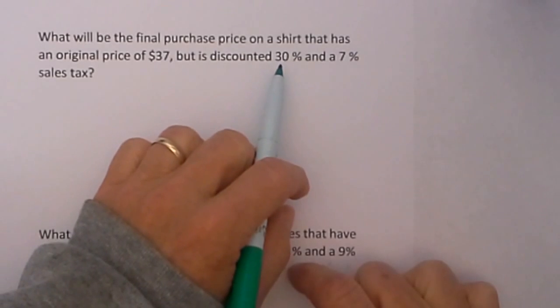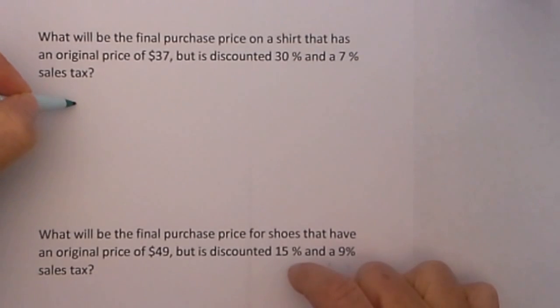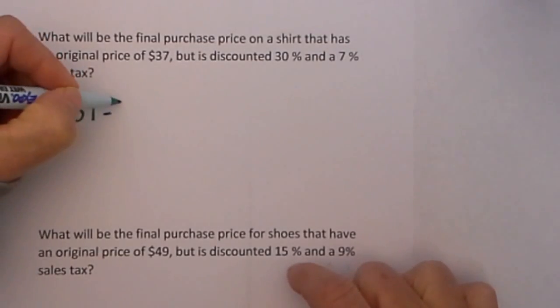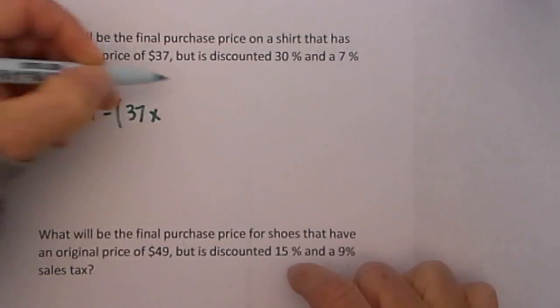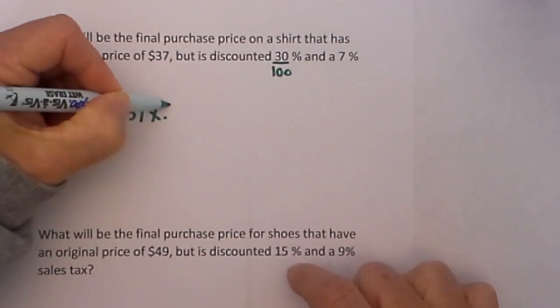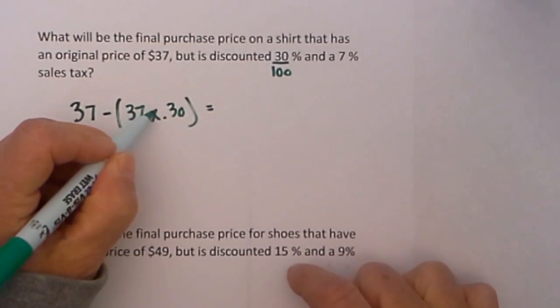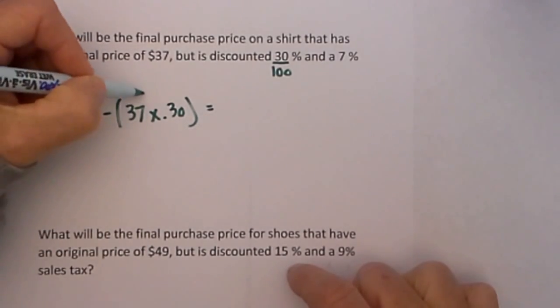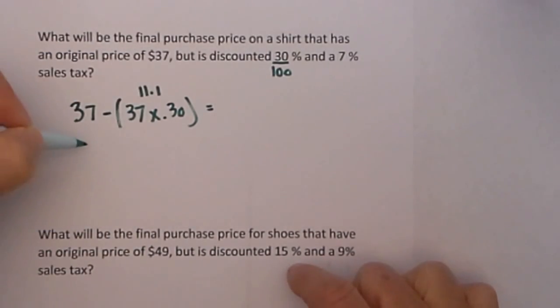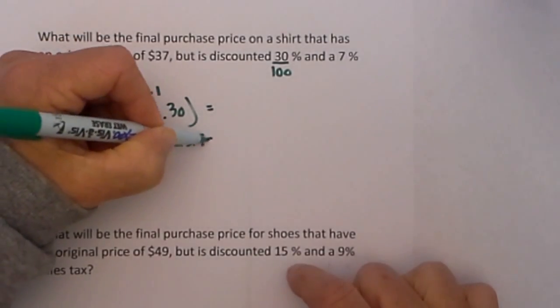I'll use my formula. I'll take the original price minus the original price times the percent. I'm going to convert this to a decimal by dividing 30 by 100 which equals 0.3. And that equals 37 times 0.3 is equal to $11.01. So now 37 minus 11.1 equals $25.90.